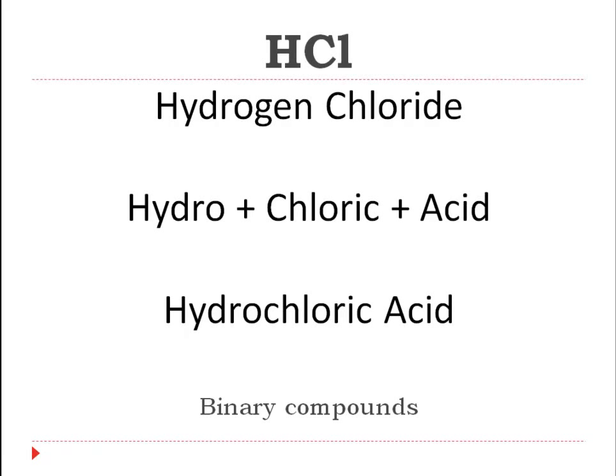If I have a binary compound — a binary compound with two elements, hydrogen and chlorine — typically you might call that hydrogen chloride, maybe some of you might call it hydrogen monochloride. That's cool, but when it's an acid, the name changes.